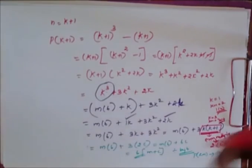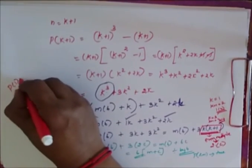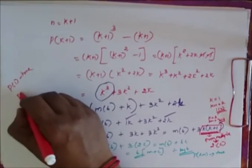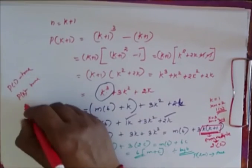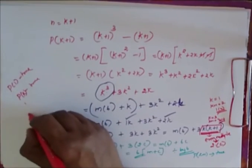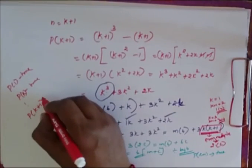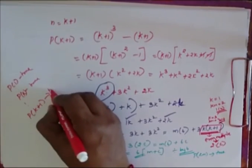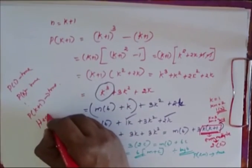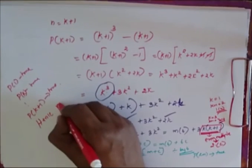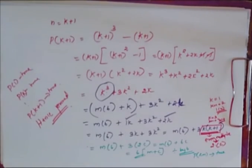So now I have proved that P of 1 is true, P of K is true, and P of K plus 1 is also true. Therefore, it is true for all positive values of N.